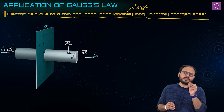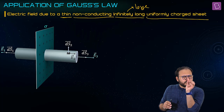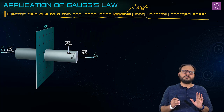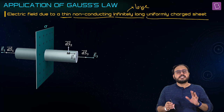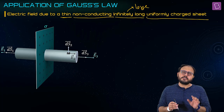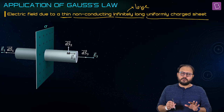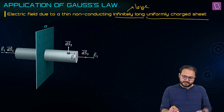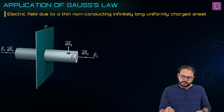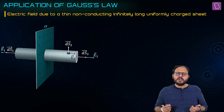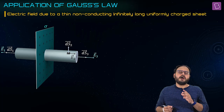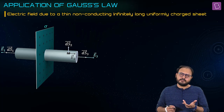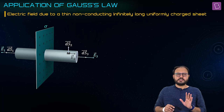Of course there is a thickness, but it is so, so small that it's almost zero — negligibly small, but non-zero, but almost zero. But what were you doing up till now, sir? It was a cuboid. But the method remains the same.